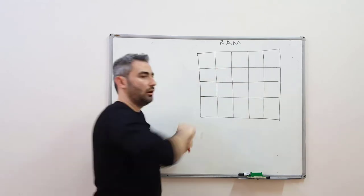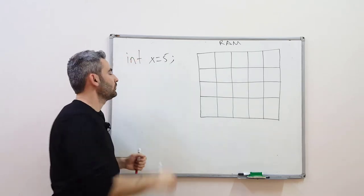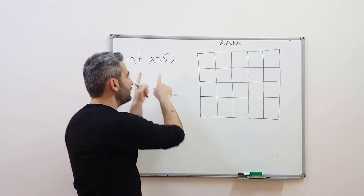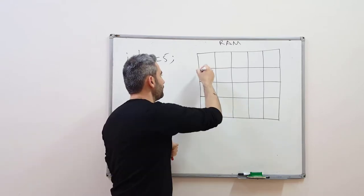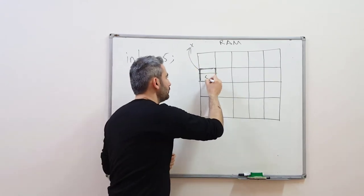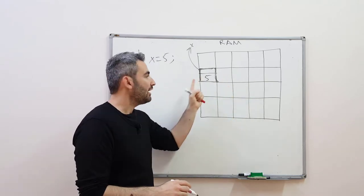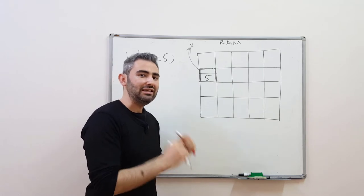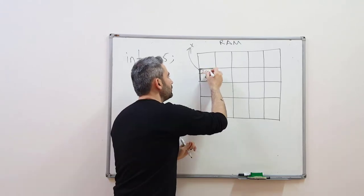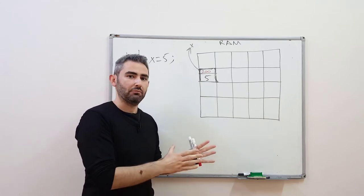Each of these squares are hotel rooms. So if you write something like this into the compiler, the operating system will look for a suitable place in the memory and place this variable into that room. Let's say our X is placed here — this is our X, and the value will be placed inside that room. So naturally, every room in that hotel will have a door number, the room number that indicates the address in the memory.